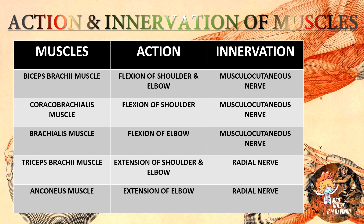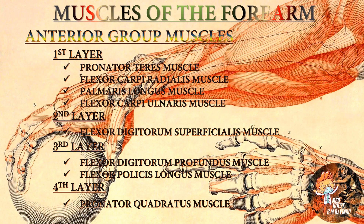Biceps brachii action is flexion of shoulder and elbow, innervated by the musculocutaneous nerve. Coracobrachialis action is flexion of shoulder, innervated by the musculocutaneous nerve. Brachialis action is flexion of elbow, innervated by the musculocutaneous nerve. Triceps brachii action is extension of shoulder and elbow, innervated by the radial nerve. Anconeus action is extension of elbow, innervated by the radial nerve.